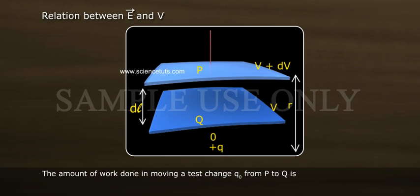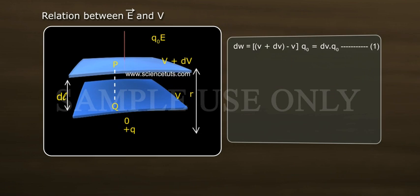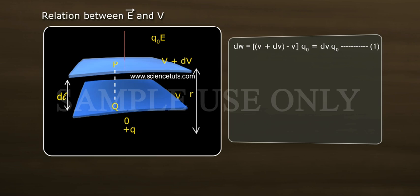The amount of work done in moving a test charge Q naught from P to Q is dW equal to V plus dV minus V of Q naught equal to dV into Q naught, equation 1.